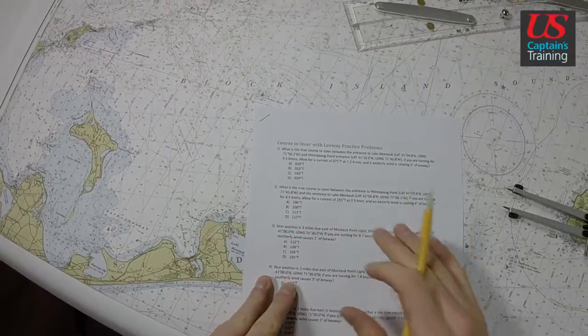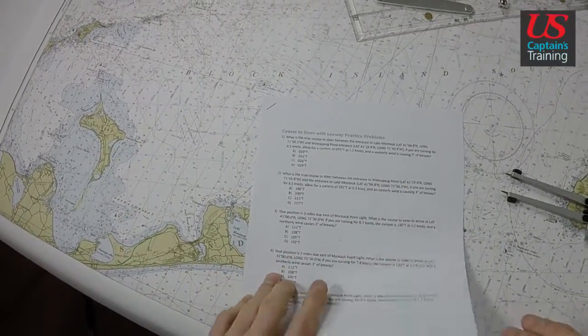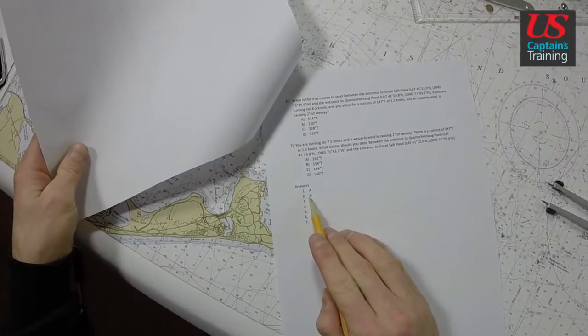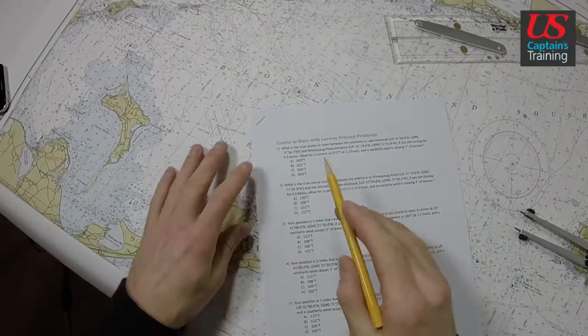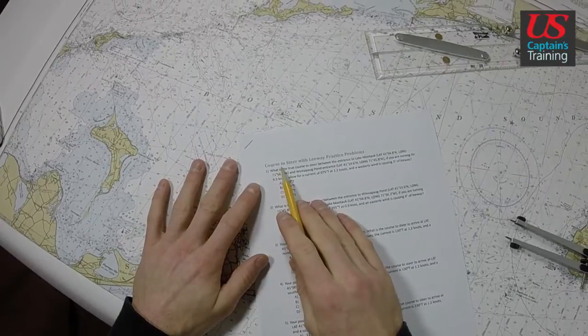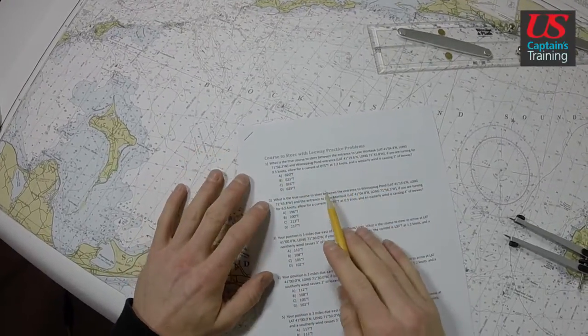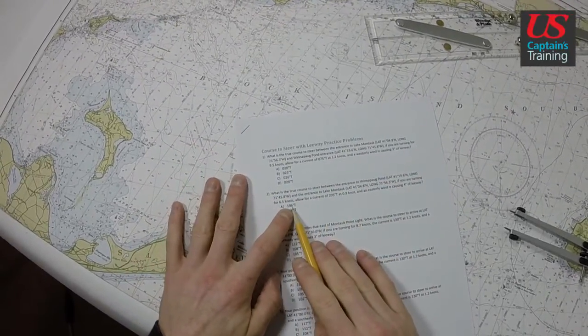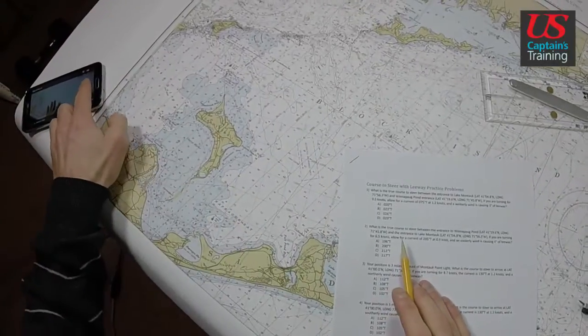Let's check that. Number 2 is A. Number 2 is A. So, the answer to course to steer with leeway practice problem 2 is A, 196.